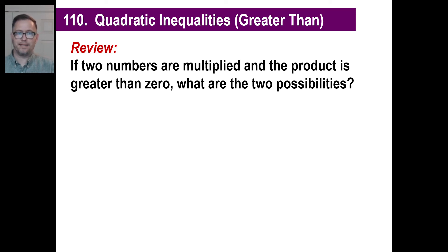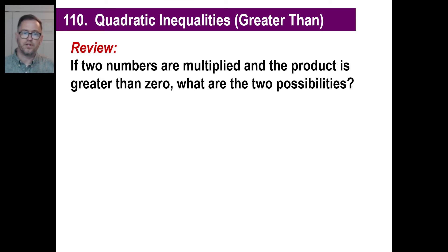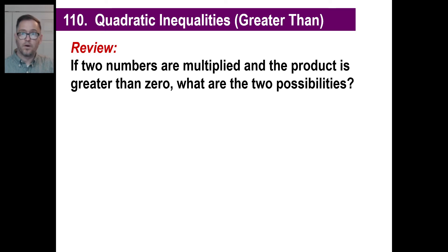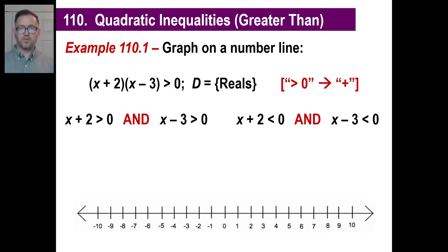Let's take a look at quadratic inequalities, greater than. But first off, let's look at this question: if two numbers are multiplied and the product is greater than zero — in other words, it's positive — what are the two possibilities? Either they're both positive or they're both negative. You can't have a negative times a positive give you a positive. We're going to use that to solve these types of problems, which might look complicated, but they're pretty simple if you break them down.